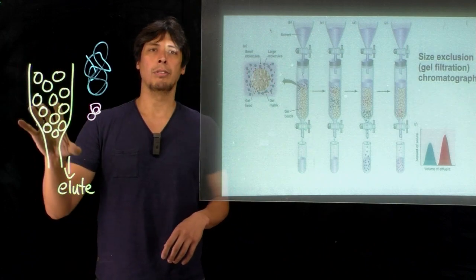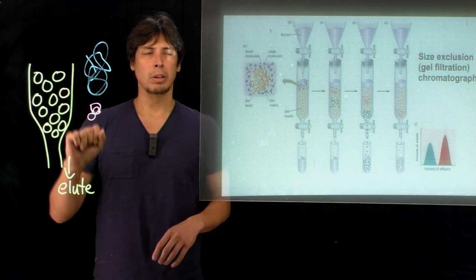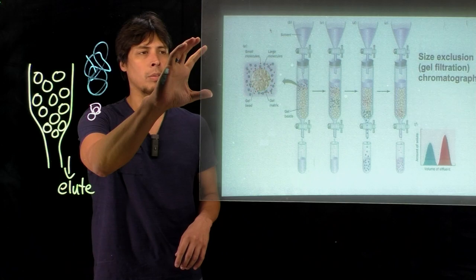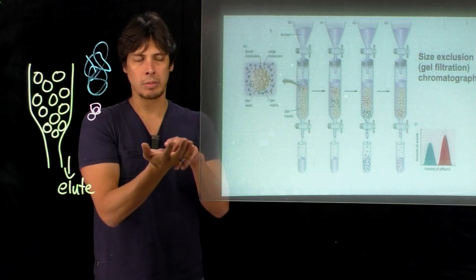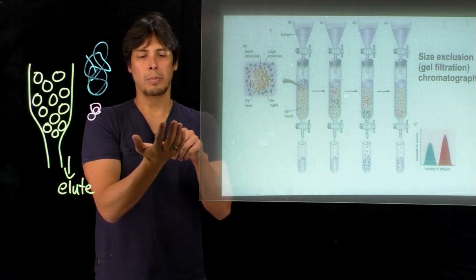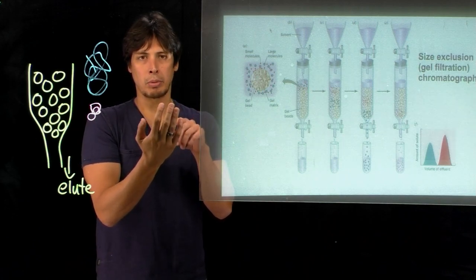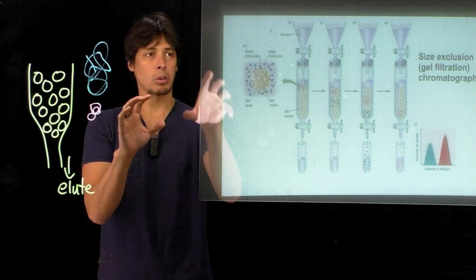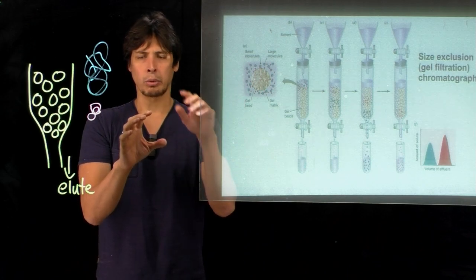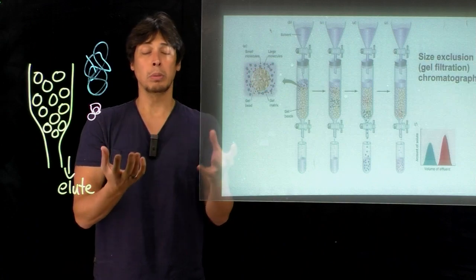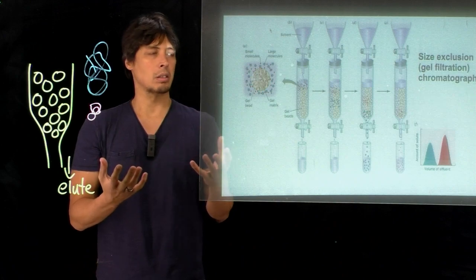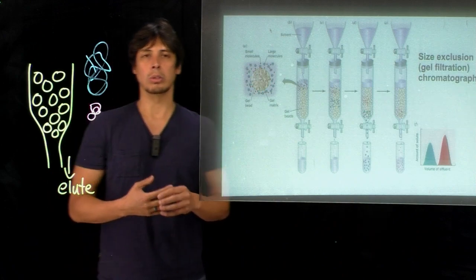In this method we don't necessarily functionalize the resin. Instead, as you can see in the upper left hand corner of the slide here, there are tunnels or channels with pores on the outside of the bead. Proteins that are small enough to enter the pores can travel through the beads, whereas proteins that are too big to enter these pores and tunnels are excluded. That's the name: size exclusion chromatography.